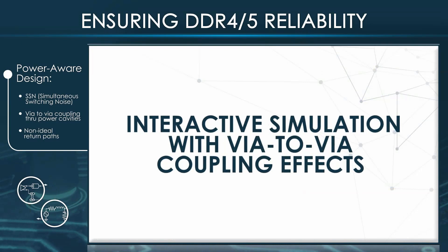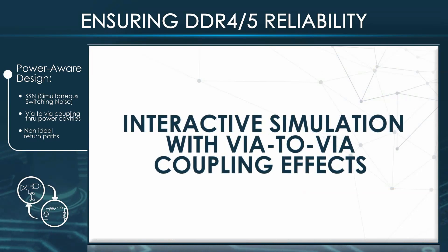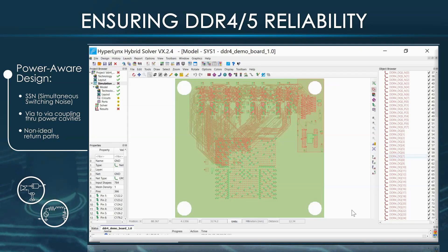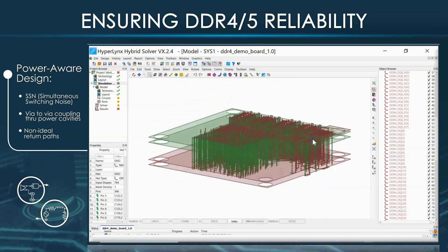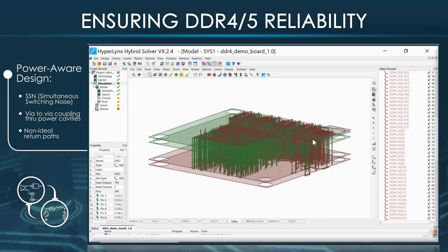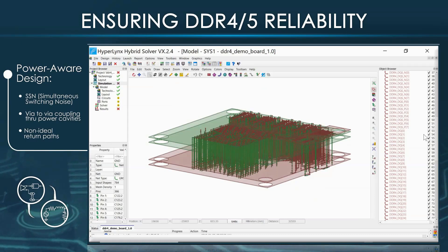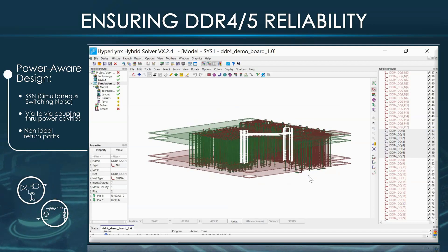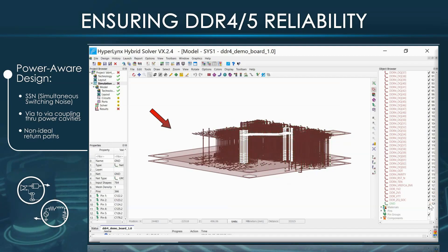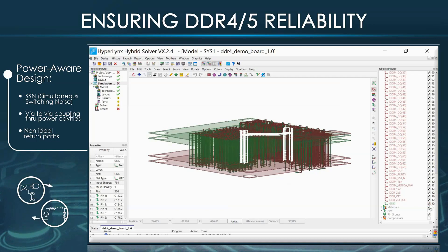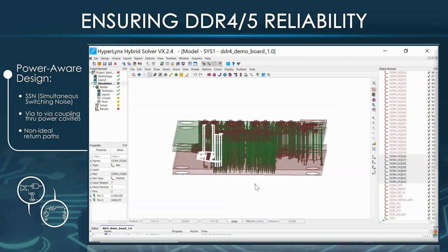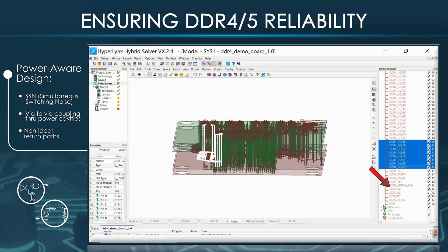Now let's interactively simulate byte lane 0 and byte lane 7 with via-to-via coupling effects. Before simulating, let's compare the reference planes of byte lane 0 and byte lane 7 using the 3D viewer of HyperLynx hybrid solver. The stack-up has 6 signal layers and 4 planes. Byte lane 0 is routed from top to the first inner layer referencing 2 ground planes, while byte lane 7 is routed from top to signal layer 0, referencing 1.2-volt and 2.5-volt power planes.